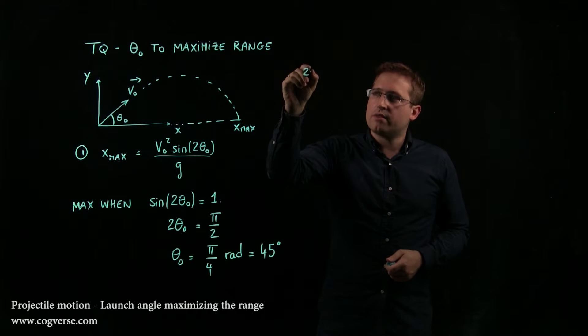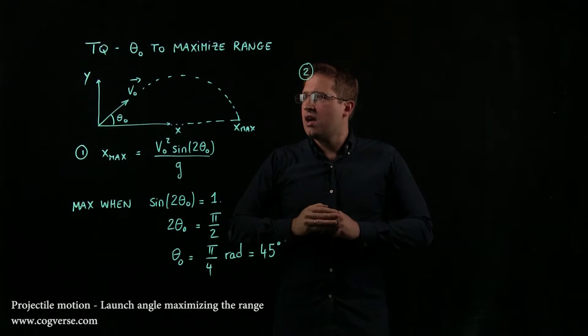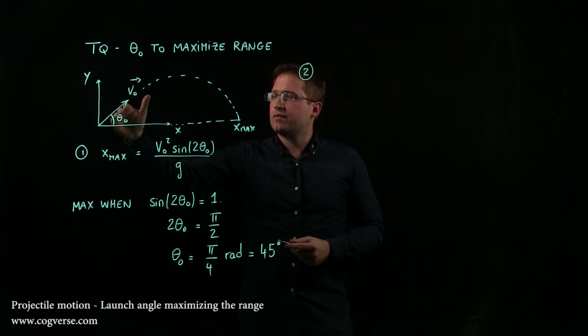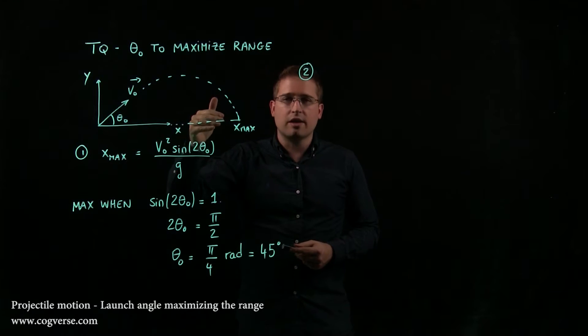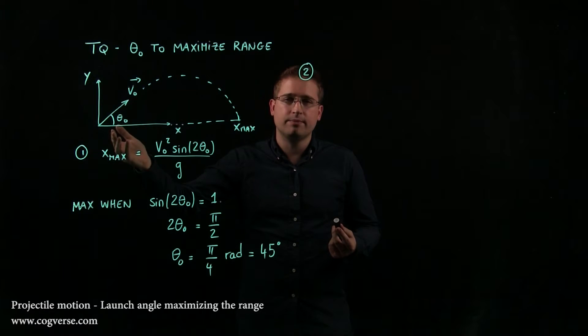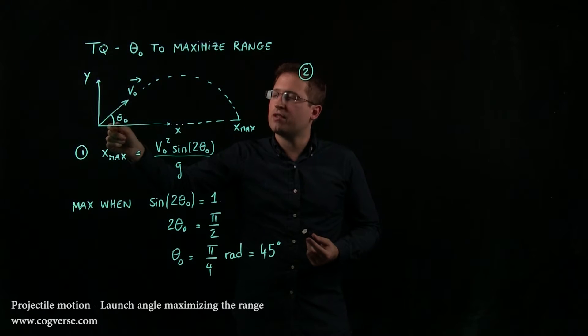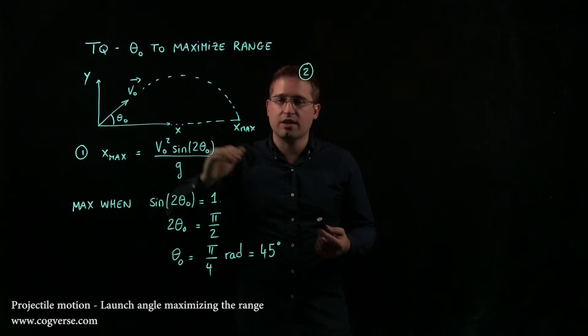And that's sort of what the second way of answering the question is based on. It's based on the fact that it's all a trade-off. If I want a lot of v₀ₓ to go fast along x, I'm not going to get a lot of v₀y, so I'm not going to get a lot of flight time. Conversely, if I want a lot of v₀y so I get a lot of flight time, if I don't have a big v₀ₓ, even with a big flight time, I'm not going to get very far.